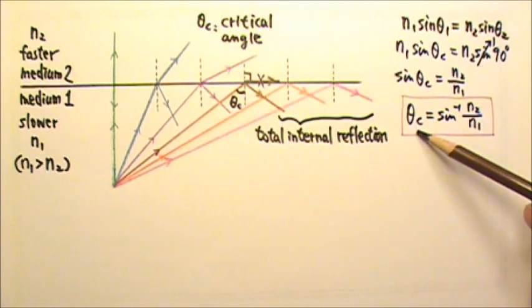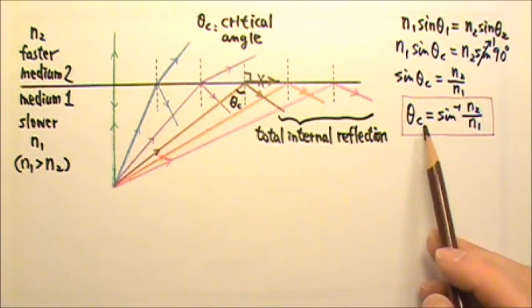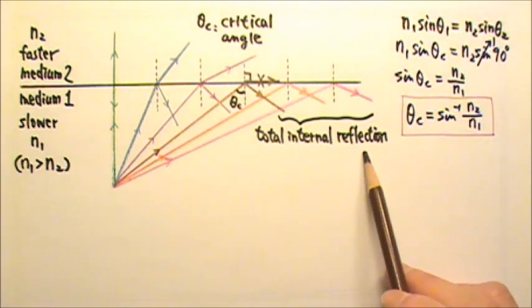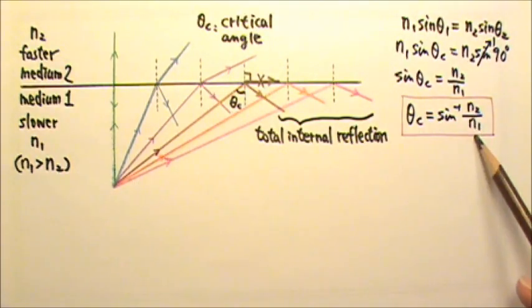We only have a critical angle when N2 is smaller than N1, because sine values can never be bigger than 1. We have critical angle and total internal reflection only when light originates from the slower medium, the medium with the larger index of refraction.